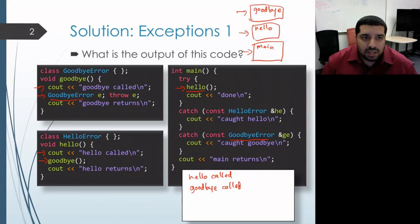Execution proceeds immediately to that catch-block, skipping over the rest of the try-block. That catch-block will print out caught-goodbye.